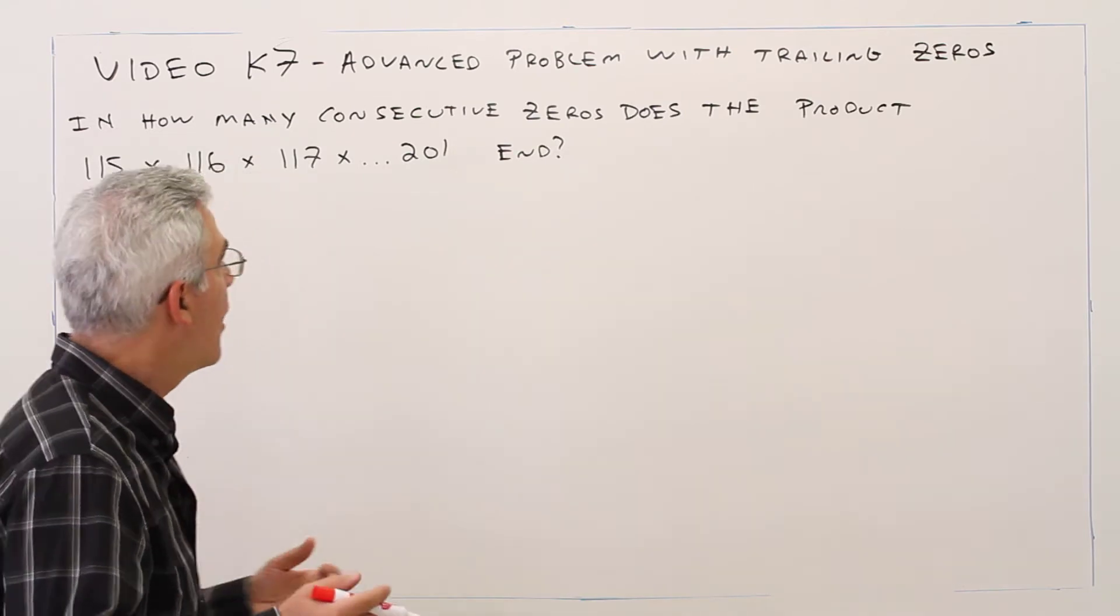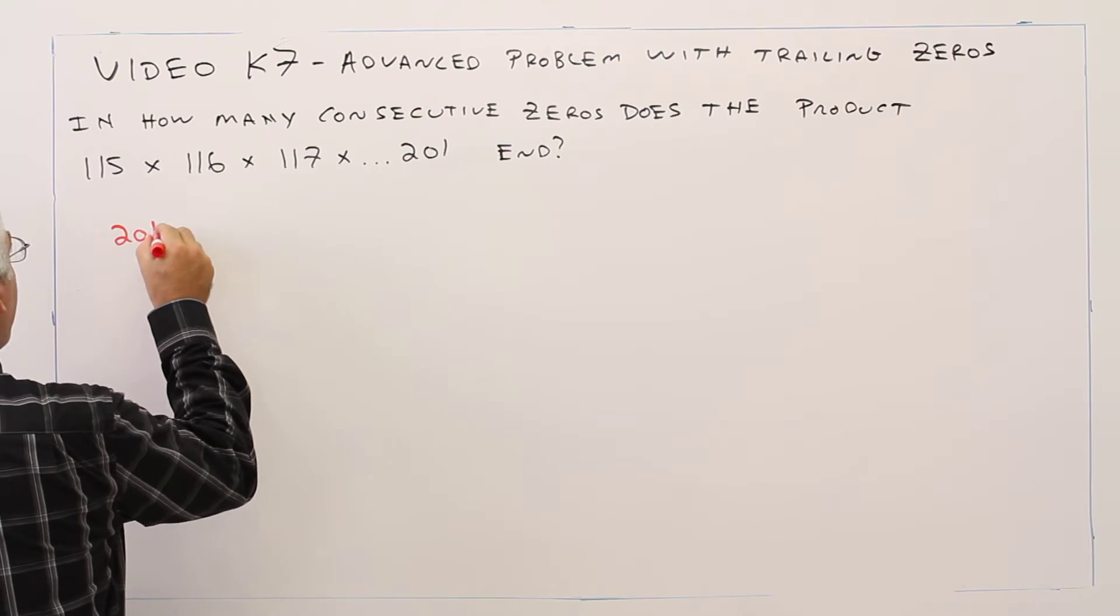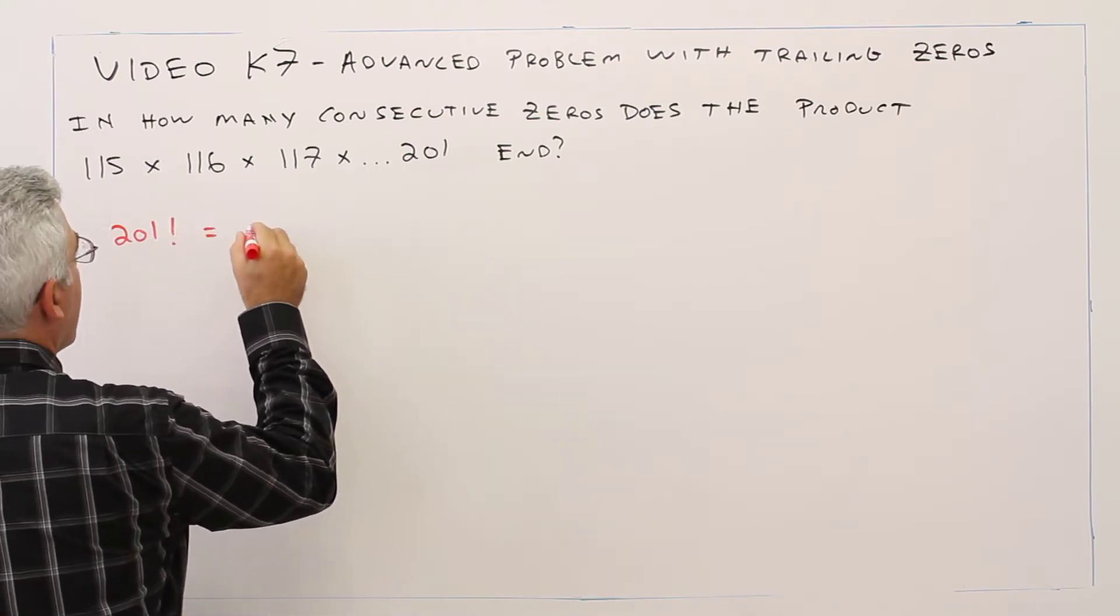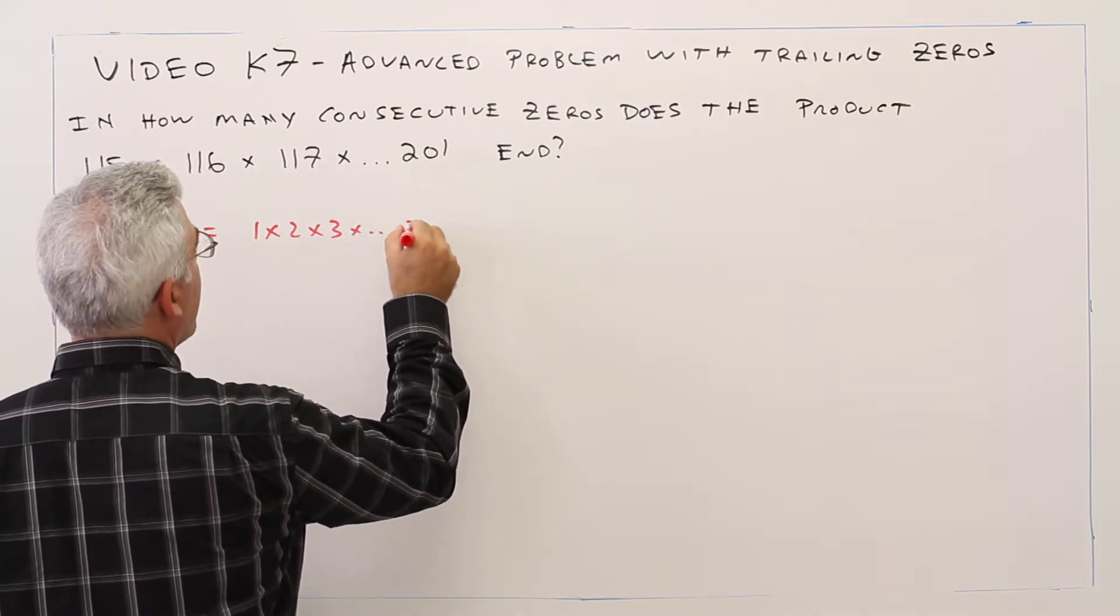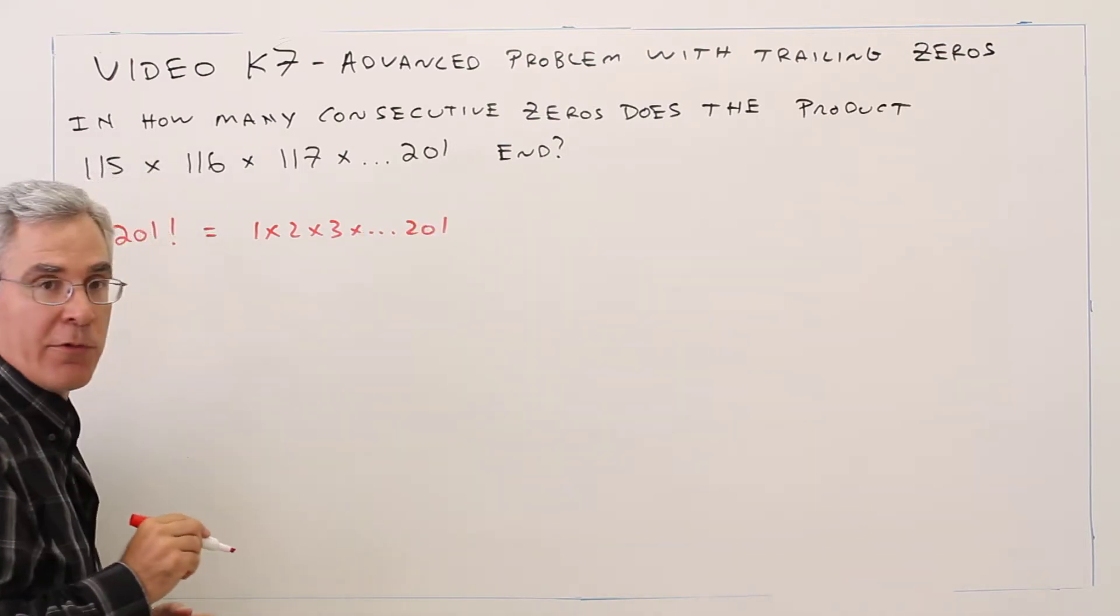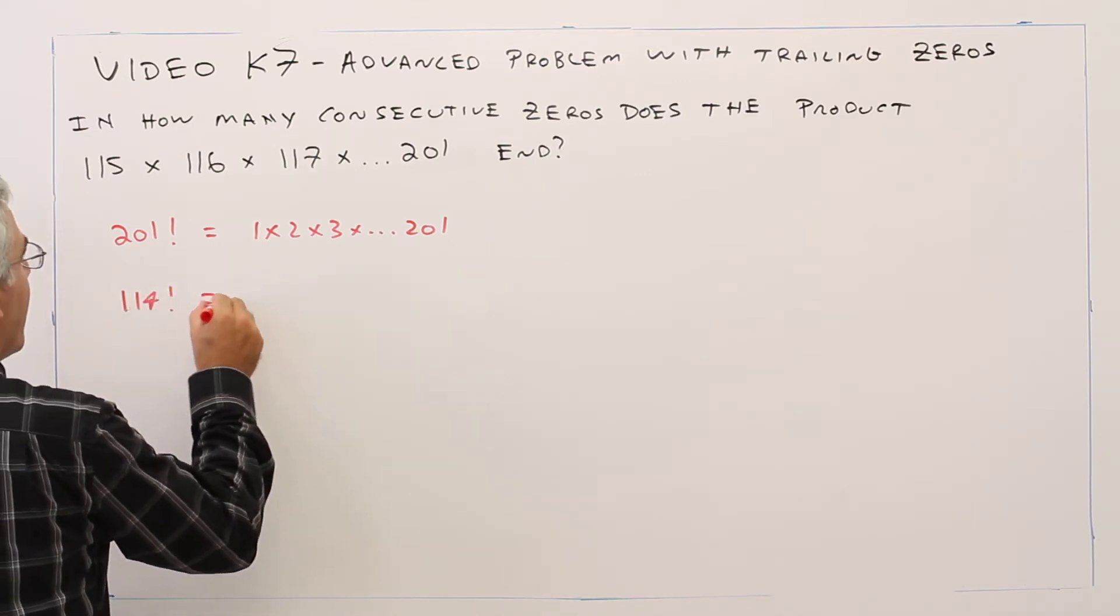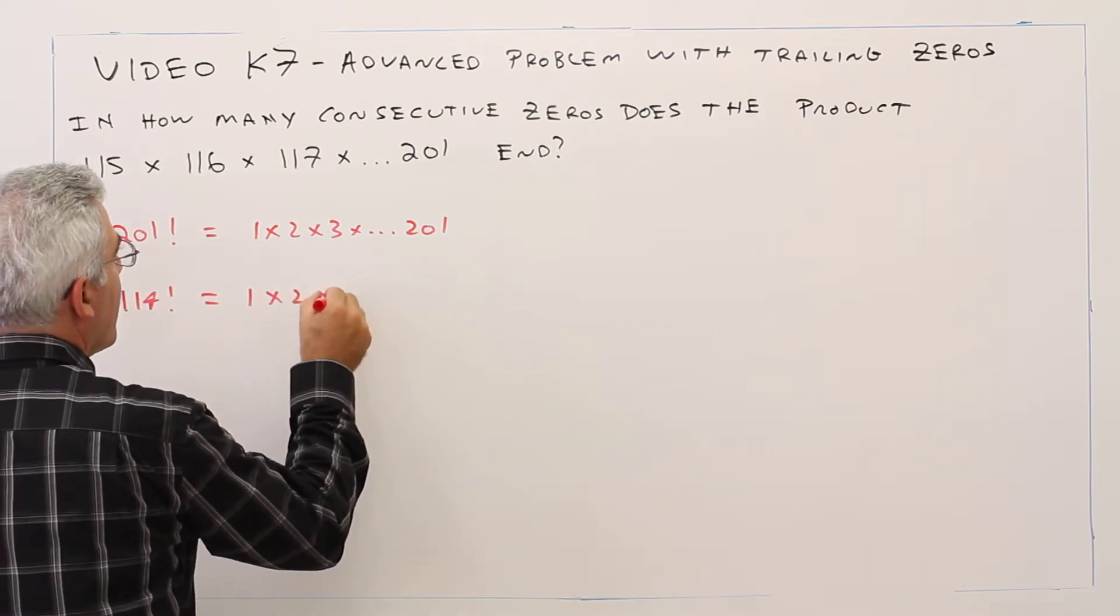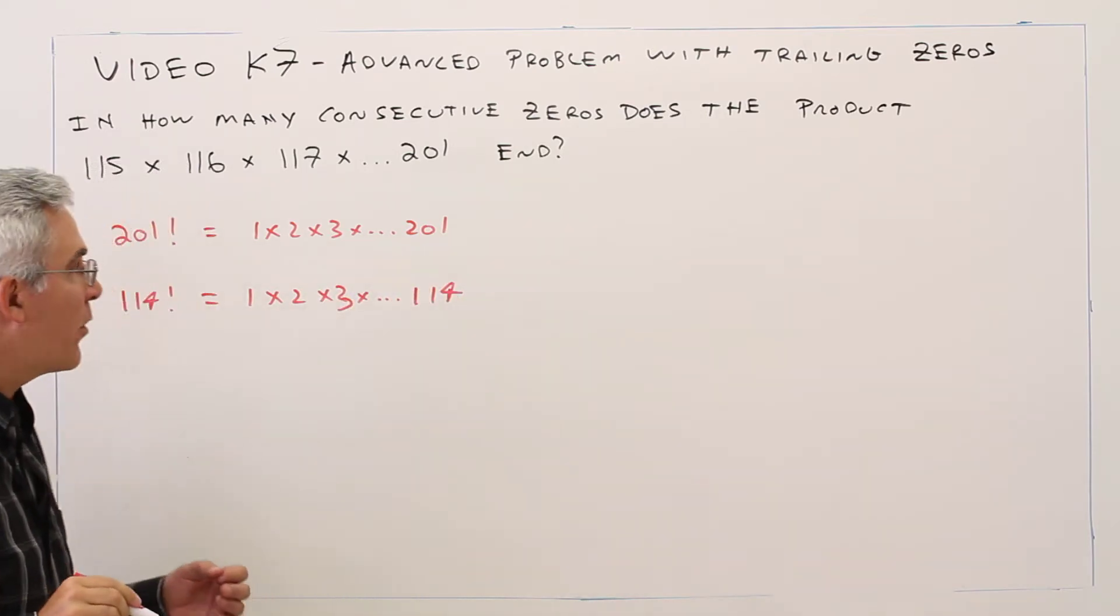Factorials start at 1. Something to keep in mind: 201 factorial is 1 × 2 × 3 × ... × 201, and 114 factorial is 1 × 2 × 3 × ... × 114.